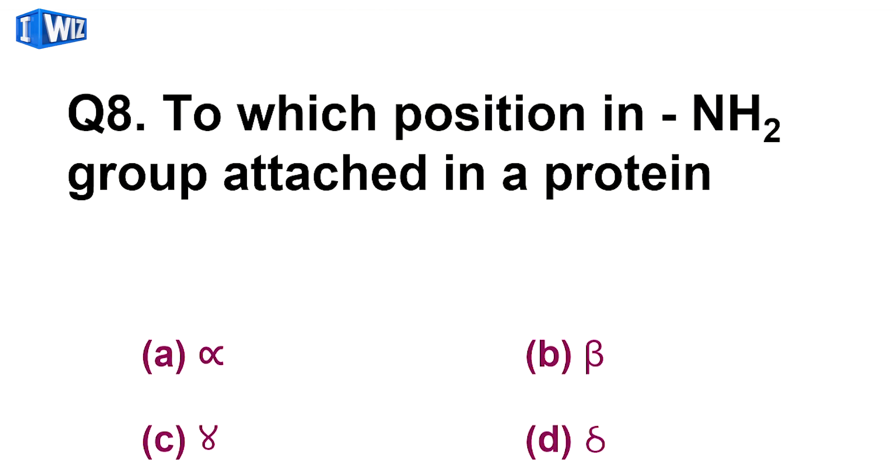Next is, to which position in NH2 group attached in a protein? So NH2 group jo hai, wo protein mein alpha position pe present hoota hai. Jisai carboxylic acid hai aapke paas, iska jo alpha carbon hai, iske oopar NH2 group attached hoota hai. Isi liye hume isa kehate hai ki ya alpha amino acid hai. So A is the correct answer.